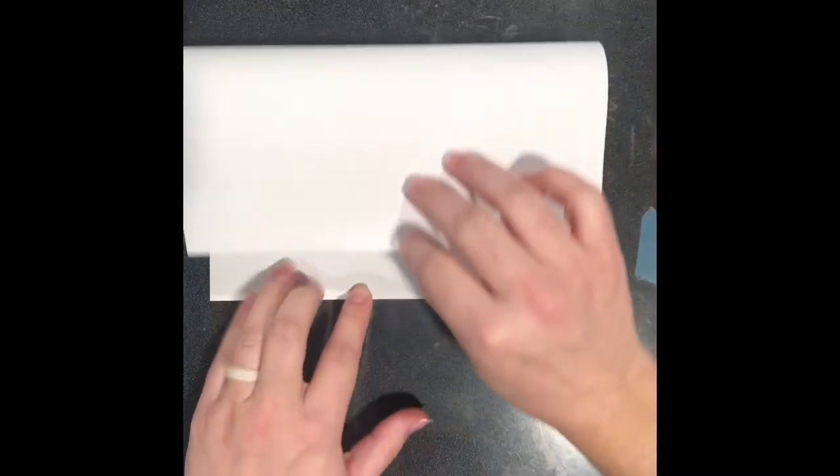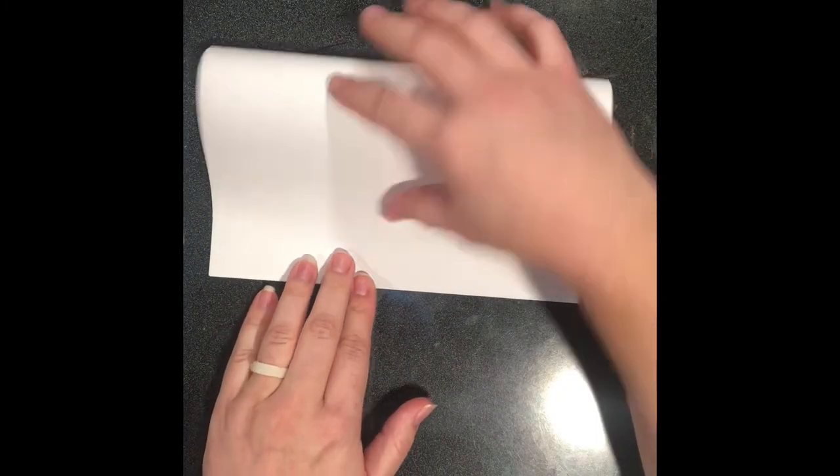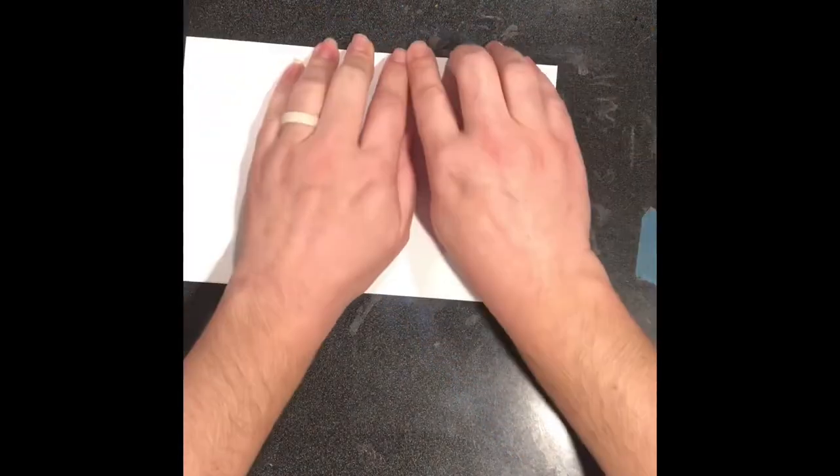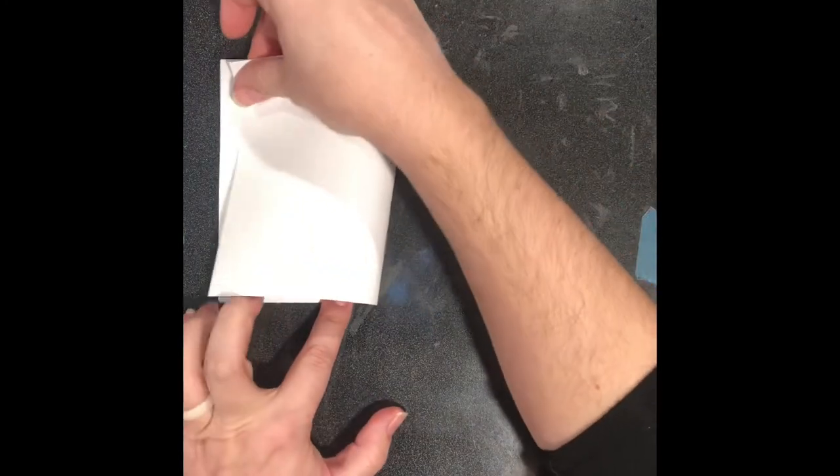Grab your paper at the top. My paper is turned portrait style or tall like a building. I'm going to bring the top down to the bottom, smooth out the edges. So now my paper has been folded in half and I'm going to fold it in half again. I'm going to grab my right side and bring it over to the left side.